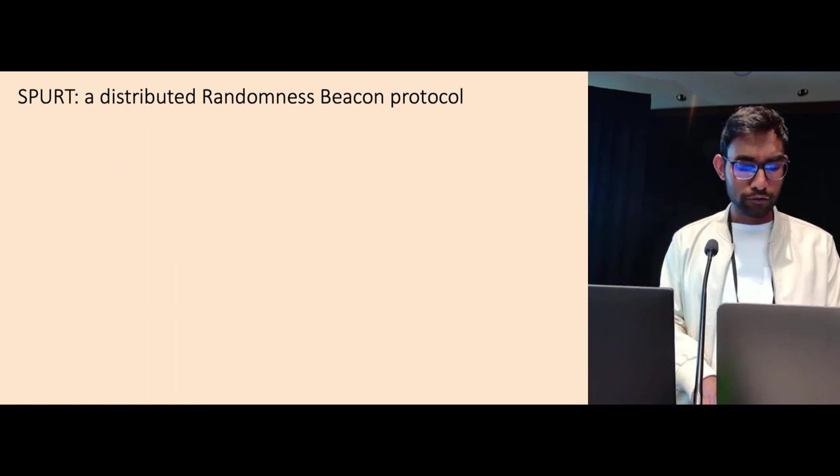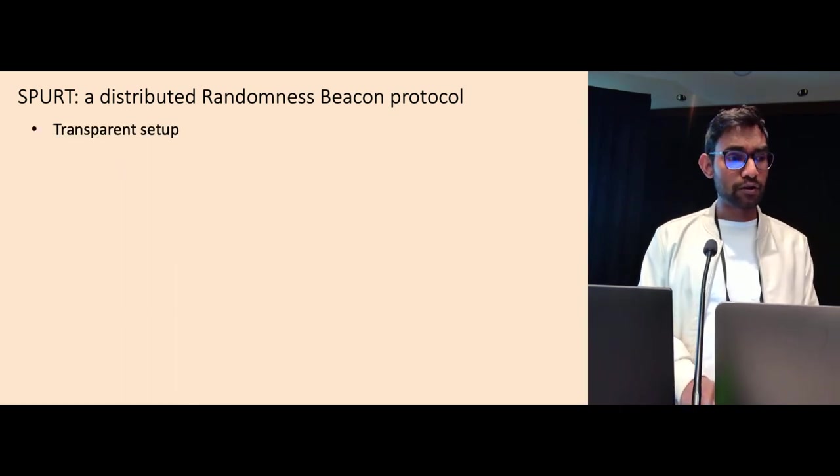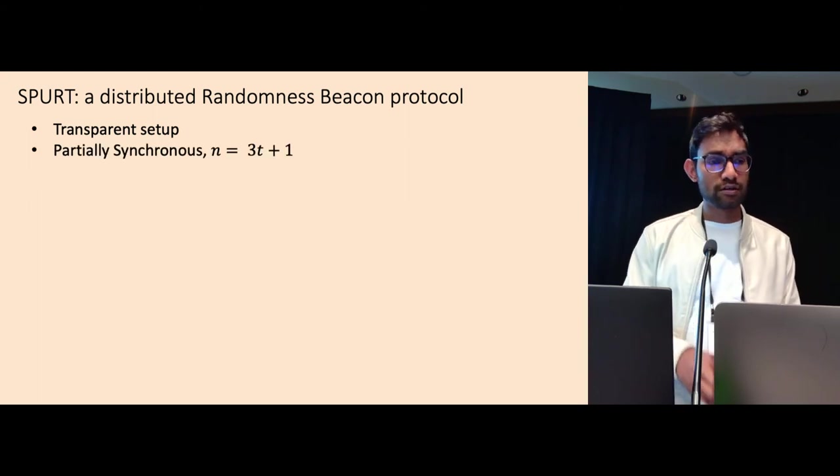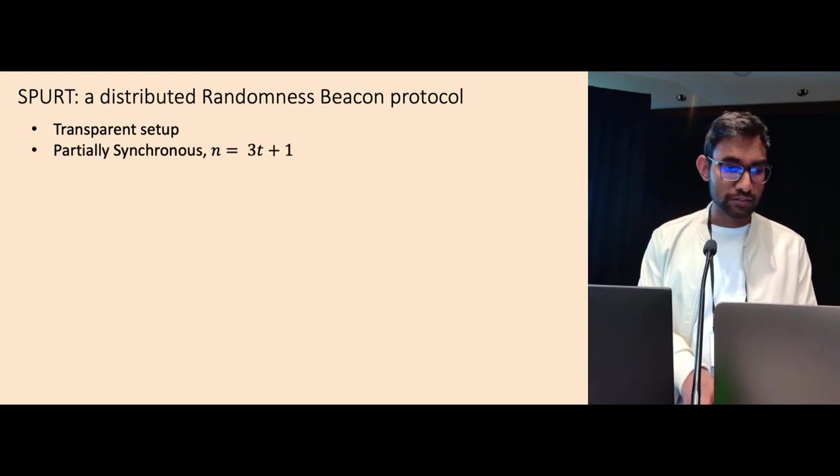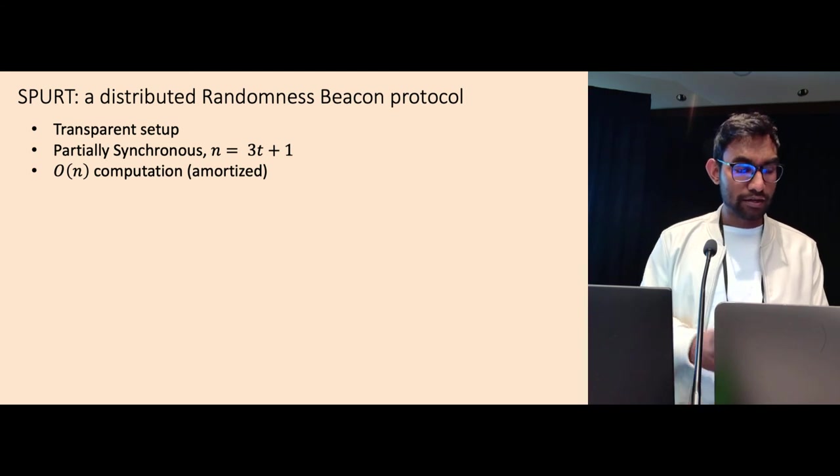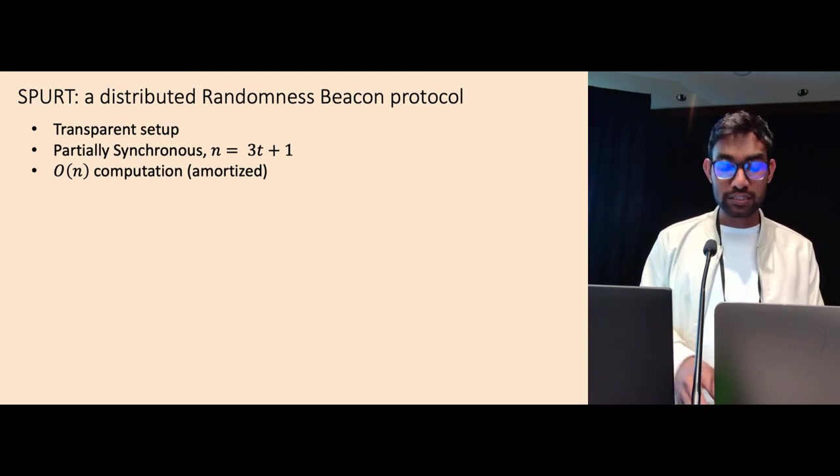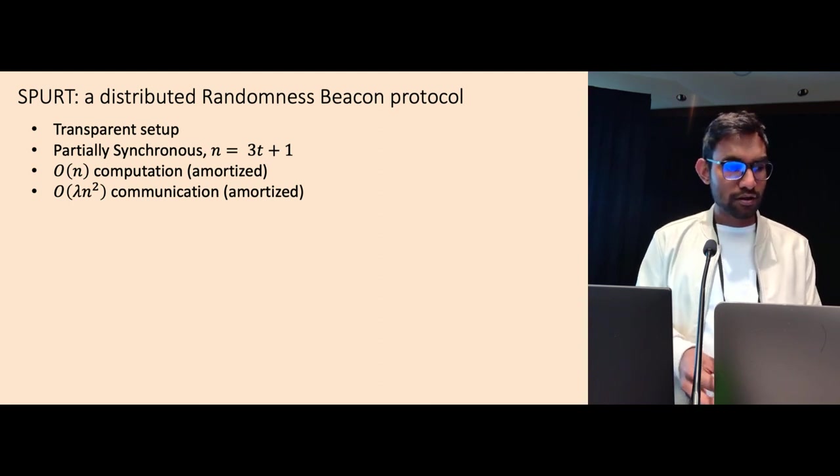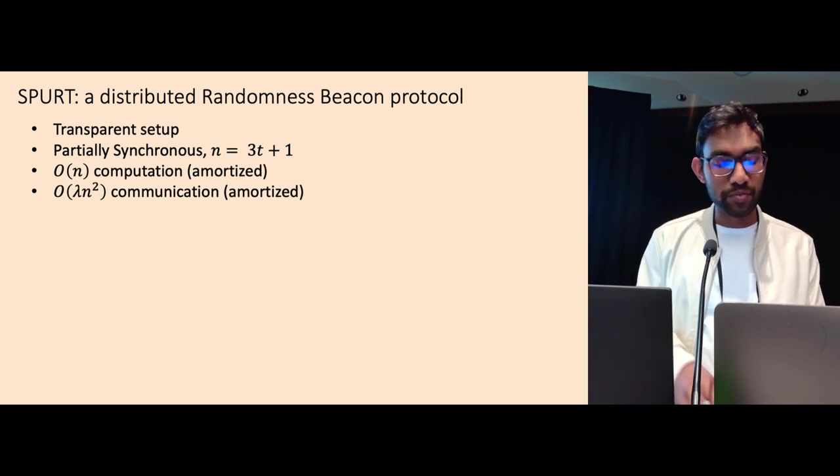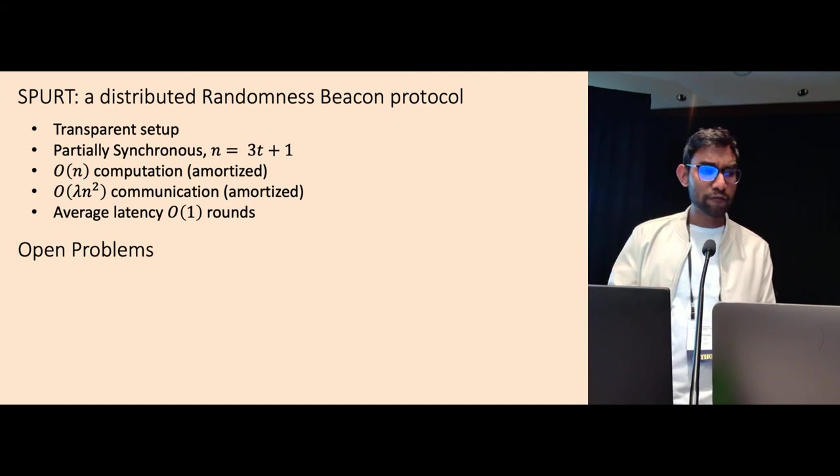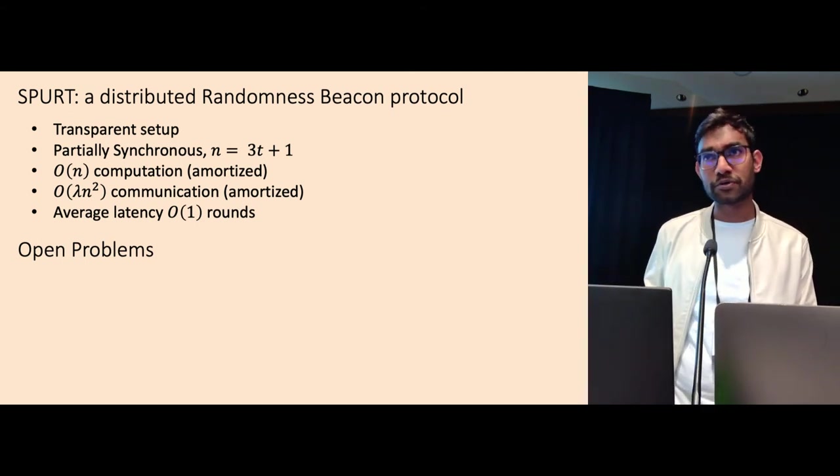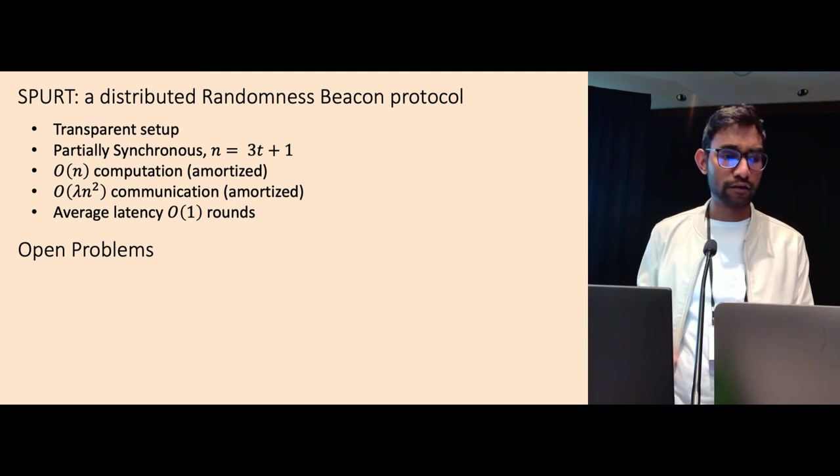So in summary, we present a distributed randomness beacon protocol which only requires transparent setup. It is partially synchronous, can tolerate up to one-third malicious failures and it has order n computation amortized per beacon output and lambda n square communication cost per beacon output. And our average latency is order one rounds but in the worst case, it's possible that we do not produce any beacon for f rounds.